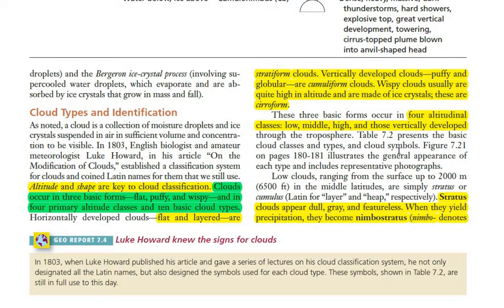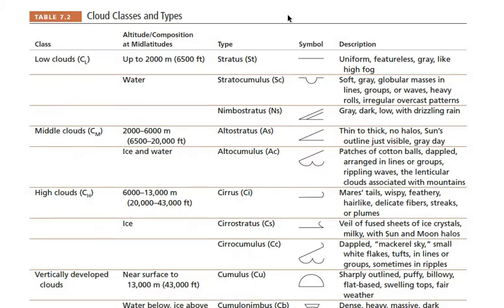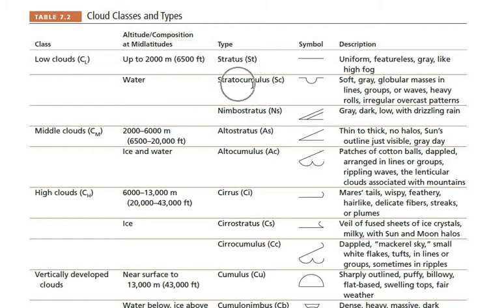A cloud's name is given by the combination of its shape and altitude. For example, among low clouds: a stratus cloud is a low cloud in layer form. Stratocumulus has both layer and cumulus-type puffy ball-like structure. Nimbostratus is a special cloud type that brings rain — it is described as a gray, dark cloud with drizzling rain.